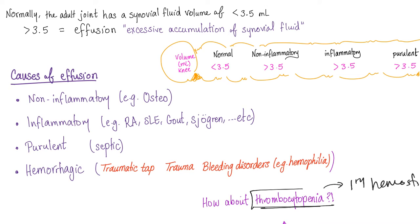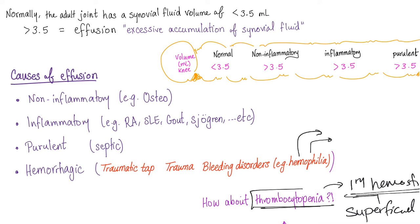As you know, problems with primary hemostasis lead to superficial bleeding — things like purpura. However, secondary hemostasis problems such as coagulation factor defects will lead to deep bleeding, such as bleeding into joints called hemarthrosis.